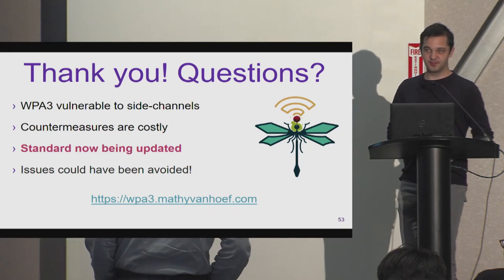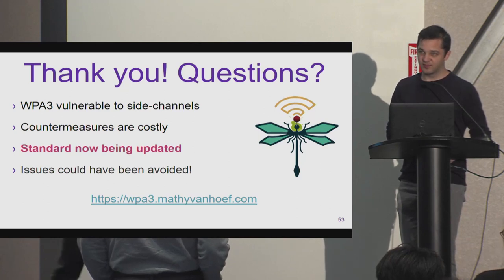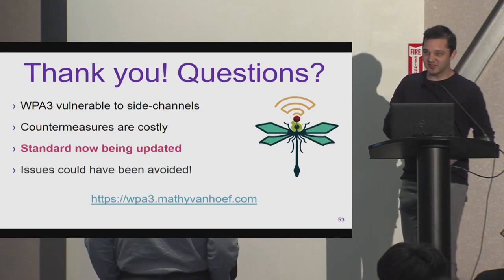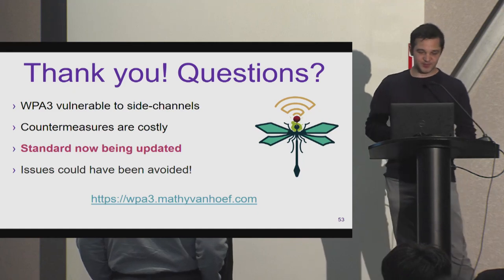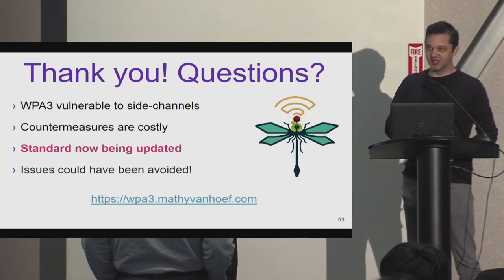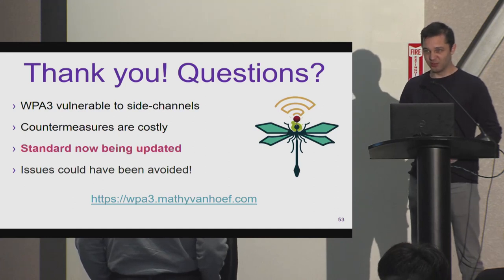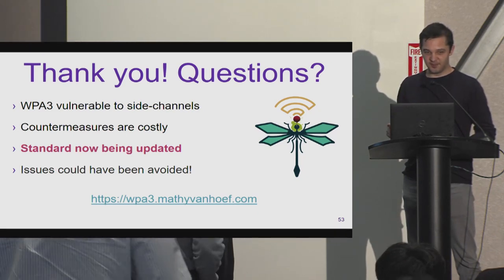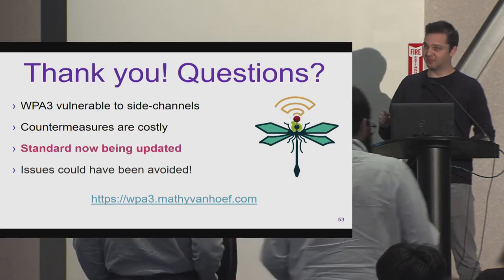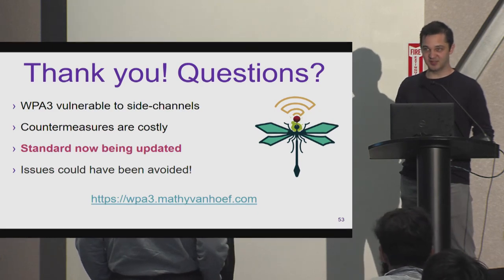Q: Why weren't developers using libraries that handle elliptic curve validation, making the invalid curve attack so prevalent? A: They are using libraries — some implementations use OpenSSL — but they forgot to call the OpenSSL function that checks whether the point is on the elliptic curve. Newer OpenSSL versions do this implicitly, but older versions don't, and quite a few implementations still use those older versions.